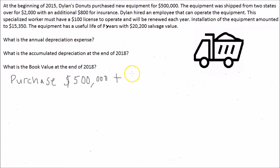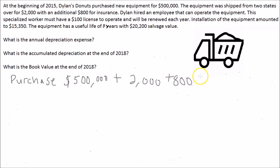The purchase price is $500,000 — that goes into the cost. We also have the shipping cost of $2,000. Whatever gets that asset ready for its intended use counts: if you don't get it shipped, you'll never have access to the equipment, so shipping is necessary. Same with the $800 insurance — you have to protect it during transit. Now the $100 employee license: you do not need that to get the asset ready for use, plus it's renewed each year, making it a recurring operating expense — not part of the cost.